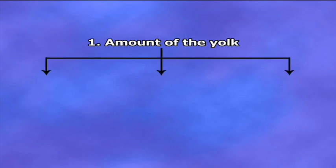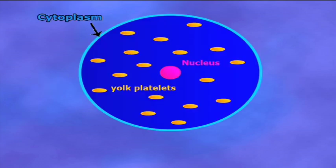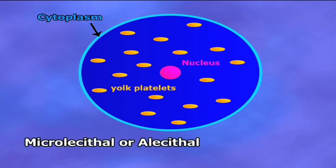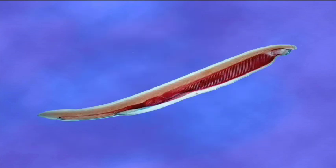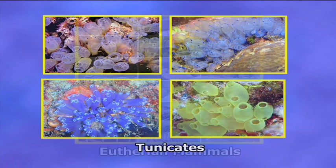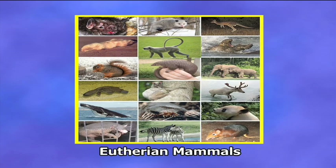Number one, according to the amount of yolk, there are three types of eggs. Microlacetal eggs: the eggs containing small amount of yolk are known as microlacetal eggs, or alacetal eggs, or oligolacetal eggs. Examples are amphioxus, tunicates, and eutherian mammals.